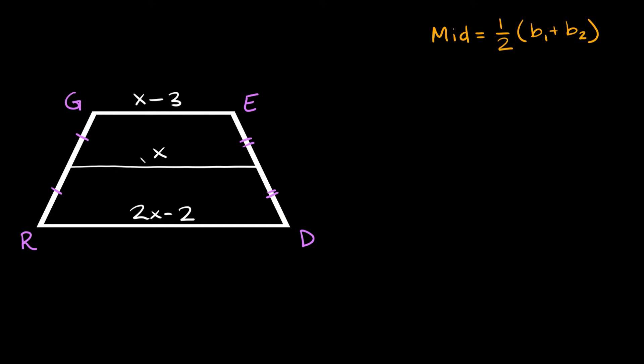So here, the mid-segment would just be equal to x. So here we could say that x is equal to 1 half, and then if we add the bases up, on top we have x minus 3, and then we're going to add the bottom base, which is 2x minus 2.